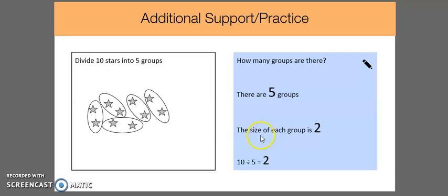The size of each group is 2, therefore there are 2 stars. If we're creating a division sentence, we have 10 divided by 5 equals 2.